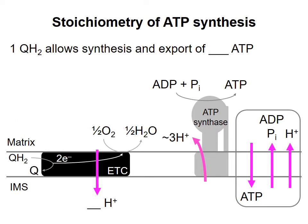Similarly, transport of electrons from one QH2 to O2 allows pumping of six protons across the membrane. When these six protons flow back into the matrix through ATP synthase and the transporters, they allow synthesis and export of one and a half molecules of ATP.